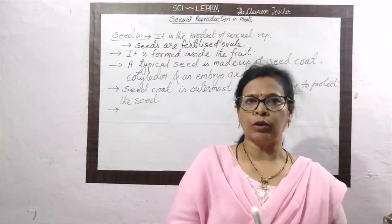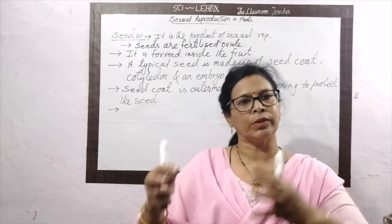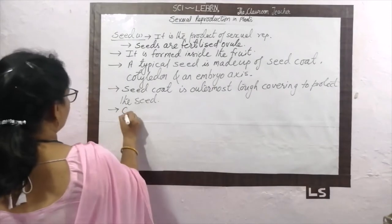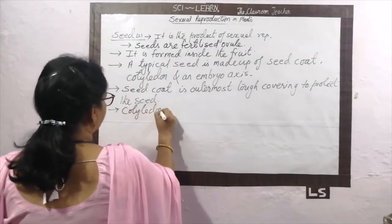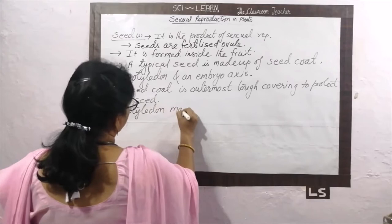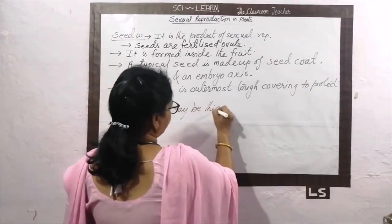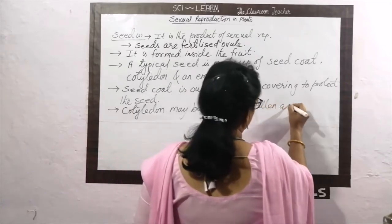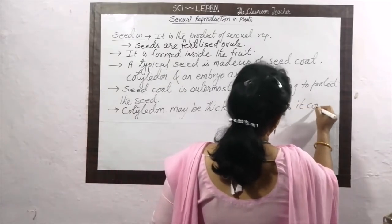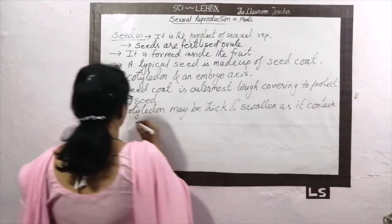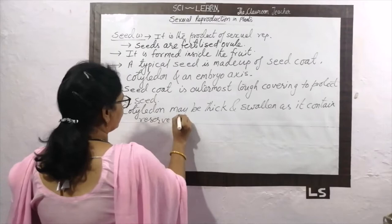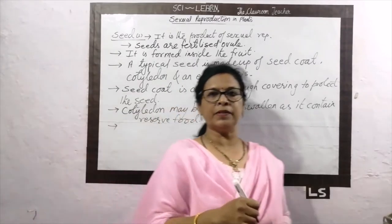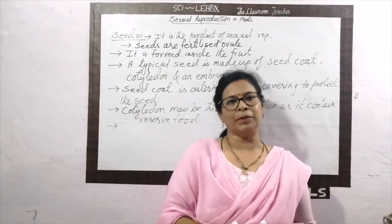Cotyledon may be thick and swollen because the food is stored in it. It contains preserved food. This food is important for germination of the seed — the food is already present in the seed for germination, to promote the growth of the embryonal axis.